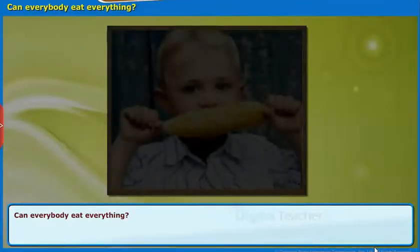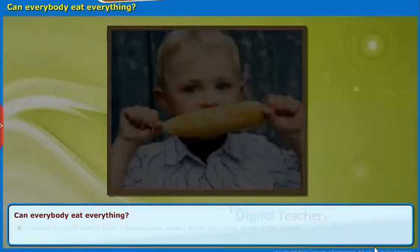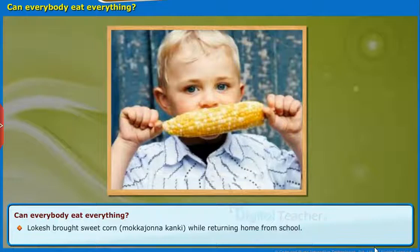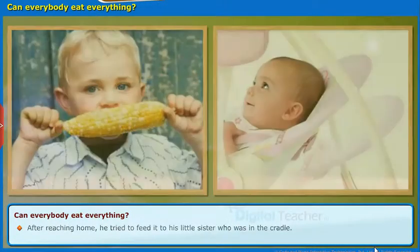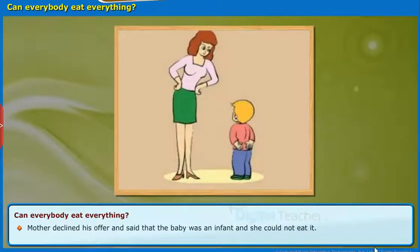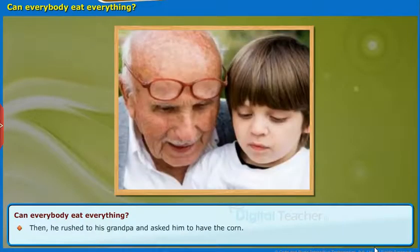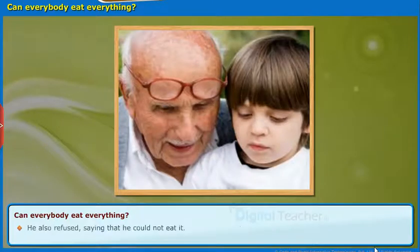Here, let us study how the food habits change according to age. Lokesh brought sweet corn while returning home from school. After reaching home, he tried to feed it to his little sister who was in the cradle. Mother declined his offer and said that the baby was an infant and she could not eat it. Then he rushed to his grandpa and asked him to have the corn. He also refused, saying that he could not eat it.